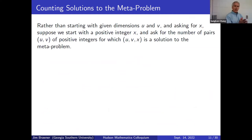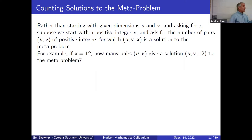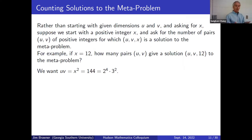Let's turn that around. Instead of starting with u and v and finding x, what if we start with a particular x and ask: how many pairs (u, v) give us a nice integer triple? For example, with x = 12, how many pairs u, v satisfy the condition? We need x² = uv, so u·v = 144. We're counting the number of ways to factor 144 into a pair u < v.